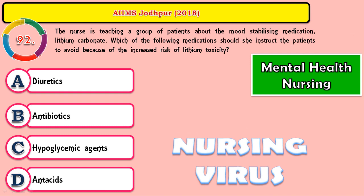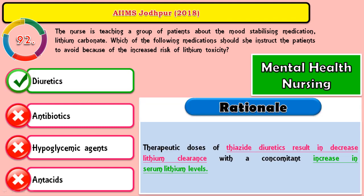Question 92: The nurse is teaching a group of patients about the mood-stabilizing medication lithium carbonate. Which of the following medications should she instruct the patient to avoid because of an increased risk of lithium toxicity? The correct answer is diuretics. The therapeutic dose of thiazide diuretics results in decreasing the lithium clearance, with a concomitant increase in serum lithium level, thereby causing the person to get lithium toxicity in the blood.